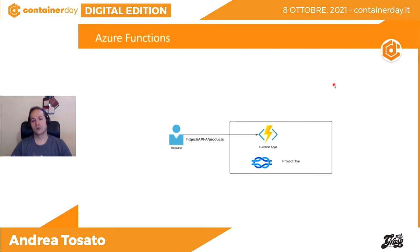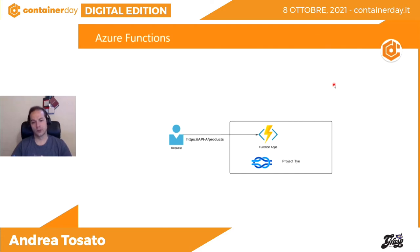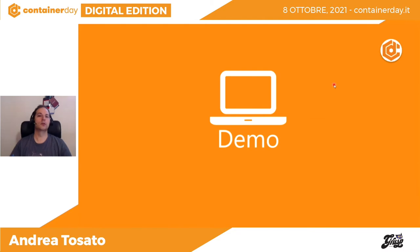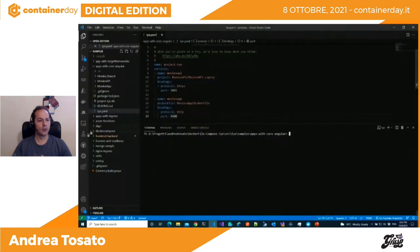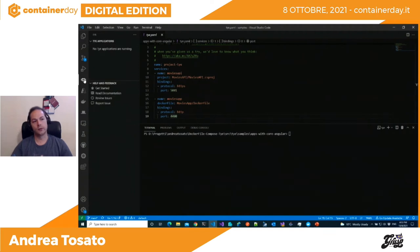Altri scenari sono presenti all'interno dei sample di TAI, un po' più settorizzati, come delle function e altre applicazioni che vedremo nelle slide di chiusura. Adesso entriamo subito con delle demo, per vedere che cos'è effettivamente TAI, da come si compone, che file dobbiamo scrivere. Andiamo ad aprire Visual Studio Code: c'è un'estensione dedicata di TAI, basta installarla direttamente da Visual Studio Code.